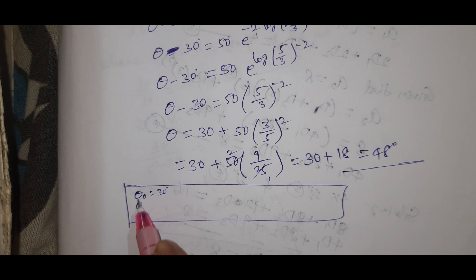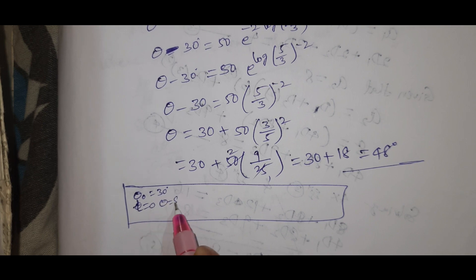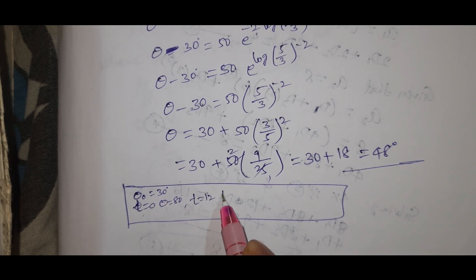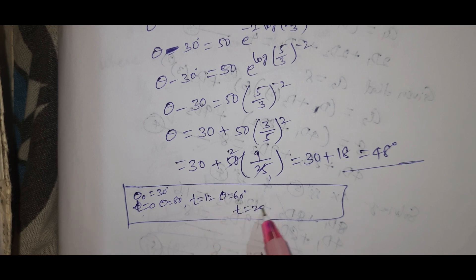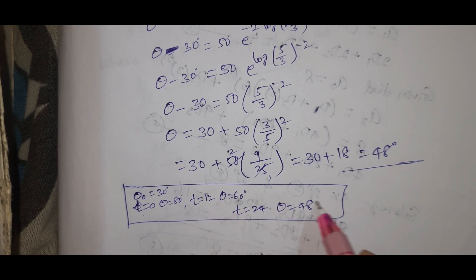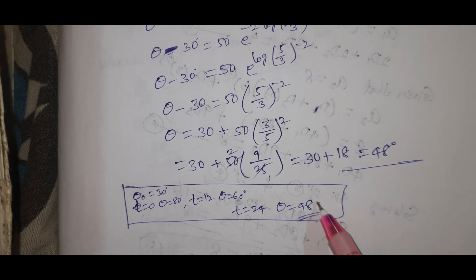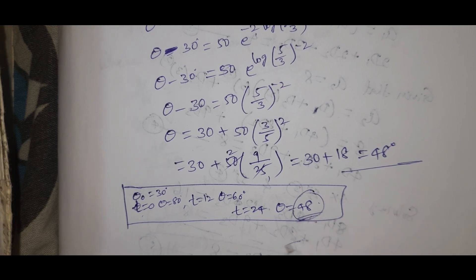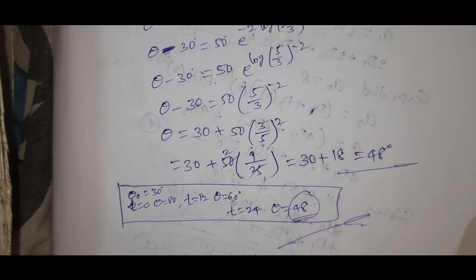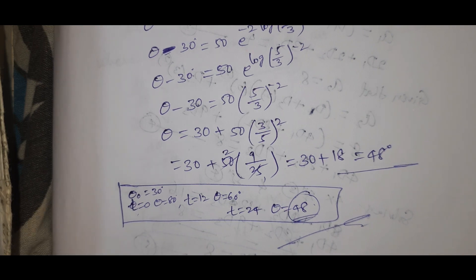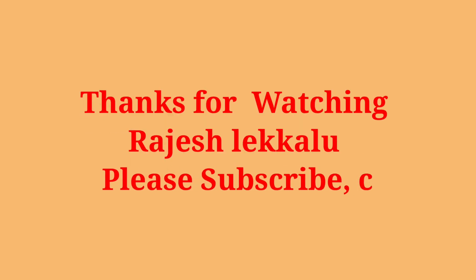To summarize: the surrounding temperature is 30 degrees. At t equal to 0, theta equal to 80. At t equal to 12, theta equal to 60. At t equal to 24, theta equal to 48 degrees centigrade. Please subscribe to my channel, don't forget to like and share. Thank you!